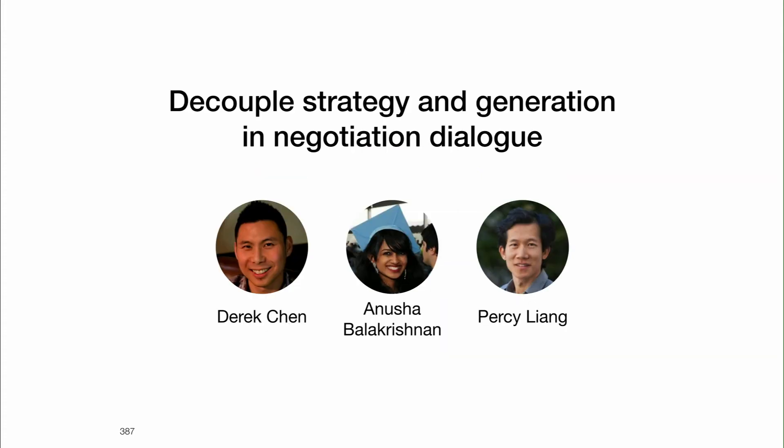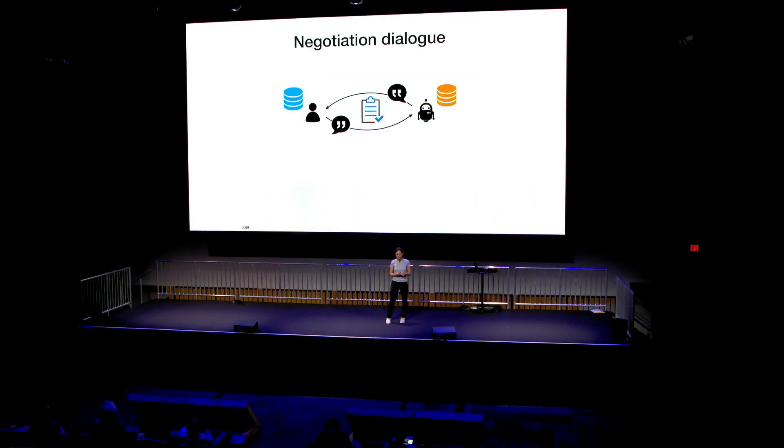In the second part, I'll talk about how we decouple strategy learning and open-ended generation in negotiation dialogue. This is again work done at Stanford, joint with Derek, Anusha, and Percy. The negotiation dialogue setting is similar to mutual friends — we have two agents, each with private knowledge, trying to chat to perform a task. But unlike mutual friends, here we're really trying to push the open-endedness of the dialogue and include more diversity in the conversation. We ground our dialogue in Craigslist posts, which has lots of real-world entities.